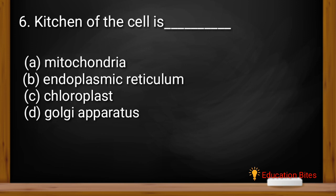Moving on to the next question, the kitchen of the cell is. The options are mitochondria, endoplasmic reticulum, chloroplast or golgi apparatus. The correct answer is C, that is chloroplast. Because chloroplast is a kind of pigment which we call chlorophyll. This pigment, which is in plant cells, they make their own food by the process known as photosynthesis.